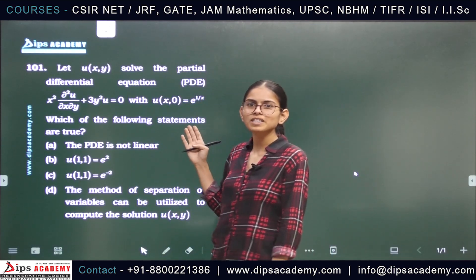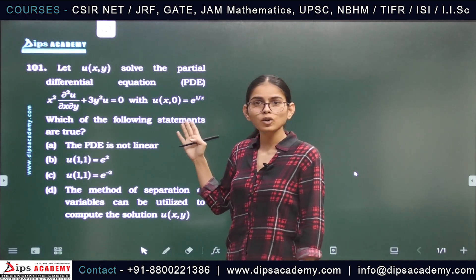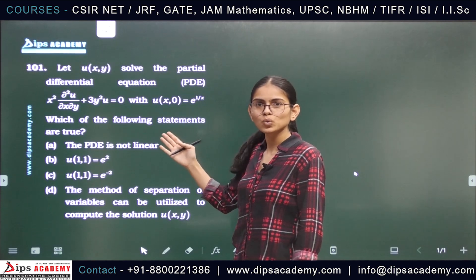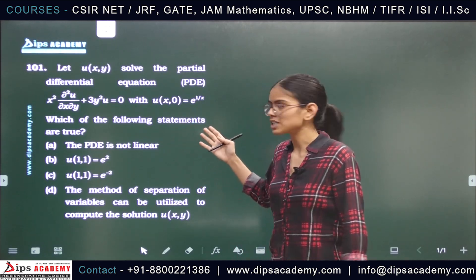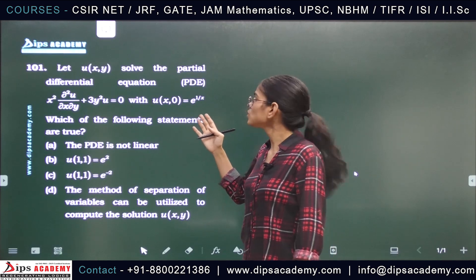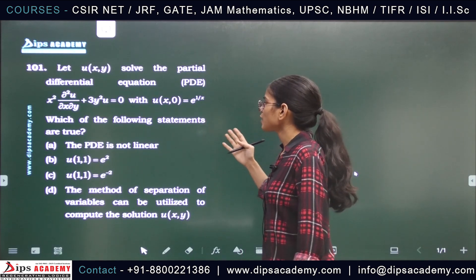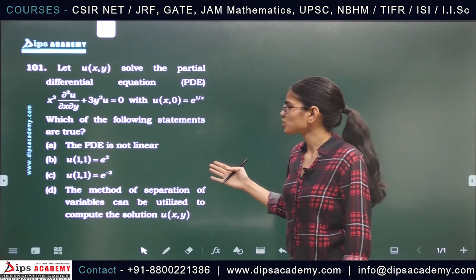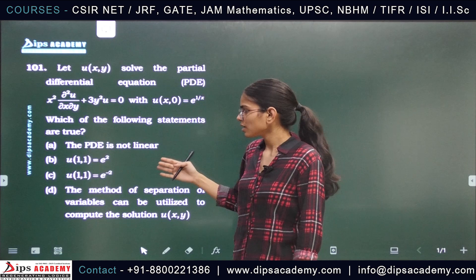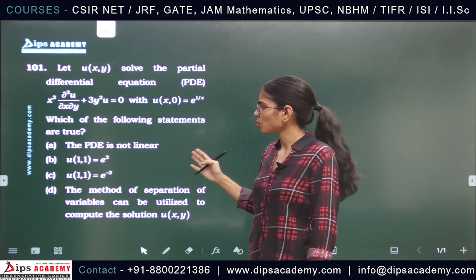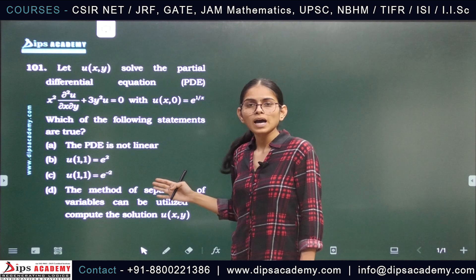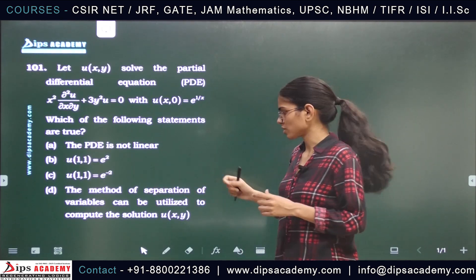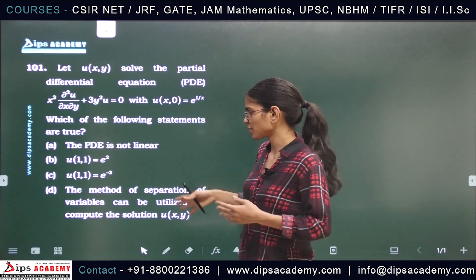We are given here with a partial differential equation that is of second order. It is x squared del squared u by del x del y plus 3y squared u equals to 0, with the Cauchy conditions that is u(x, 0) equals to e raised to the power 1 by x, and we have to choose the true statements from the given options.